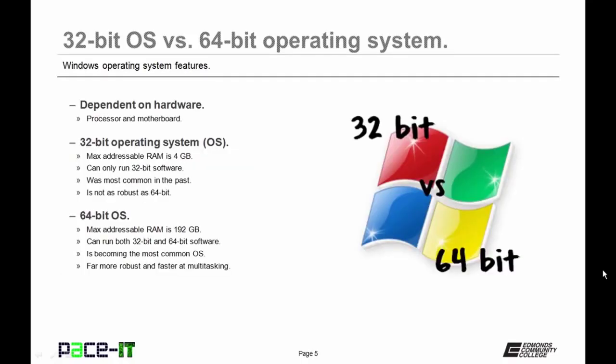A lot of this is dependent upon the hardware that you have. If you have a 64-bit processor, then you can install either a 32-bit or 64-bit OS. But if you only have a 32-bit processor, you only get a 32-bit operating system. A 32-bit operating system can only have a max of 4 gigabytes of RAM — that's all that's addressable. You can only run 32-bit software, and 32-bit operating systems were the most common in the past.